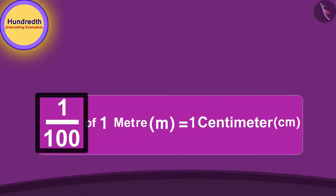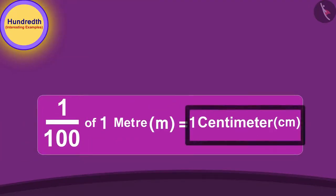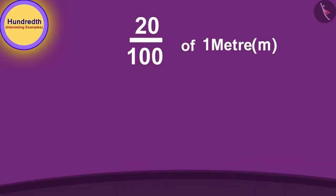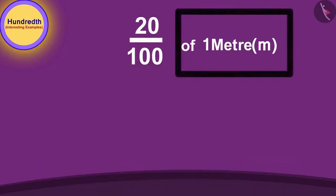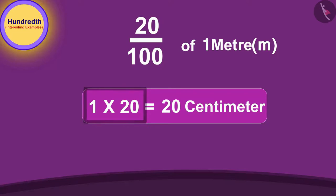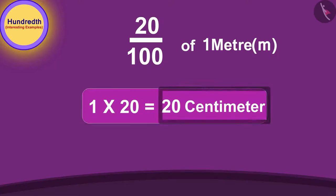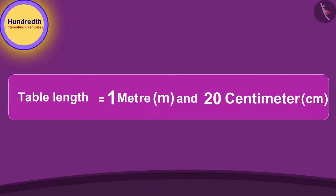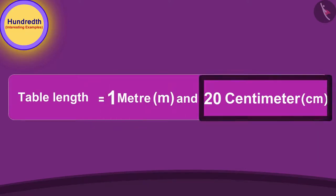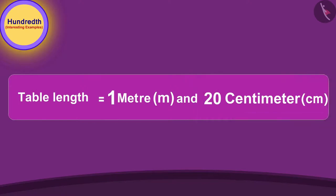The length of this table is 1.20 meters. Twenty hundredths of a meter is written after the decimal. Because one hundredth part of a meter equals one centimeter, twenty hundredths of a meter will be equal to twenty centimeters. So the length of this table is one meter and twenty centimeters.